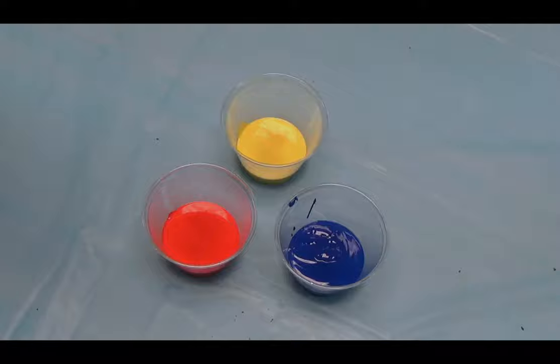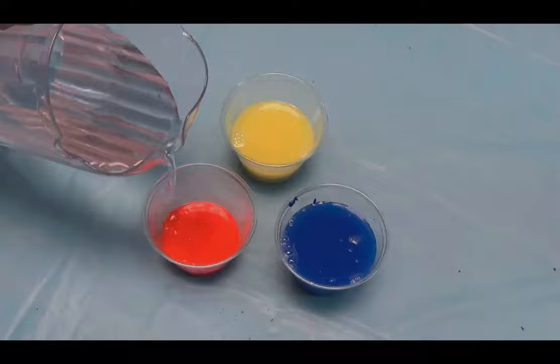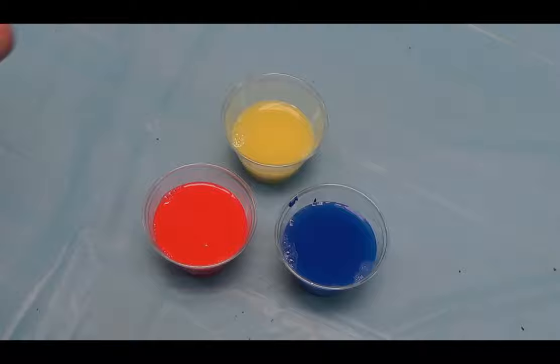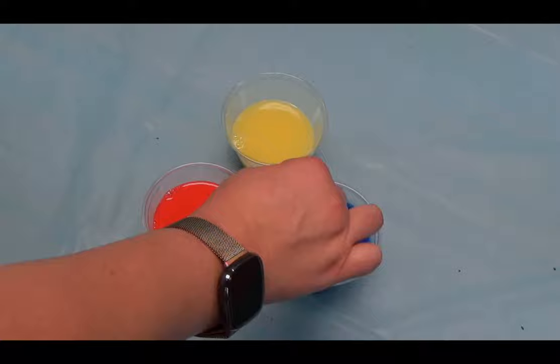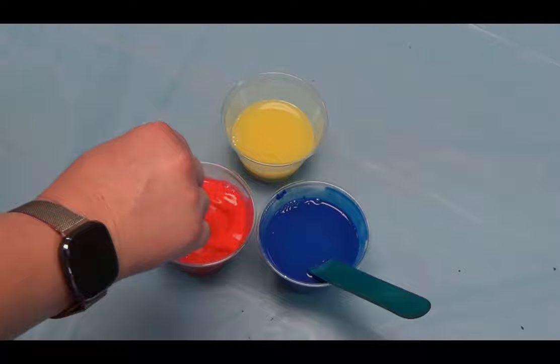Next we are going to add an equal amount of water to our paint. Then we will stir our paint and water mixture so that it is nice, smooth, and liquidy and the water and paint are combined completely. This will ensure that our paint will pour smoothly and our colors will mix easily when we do our project.